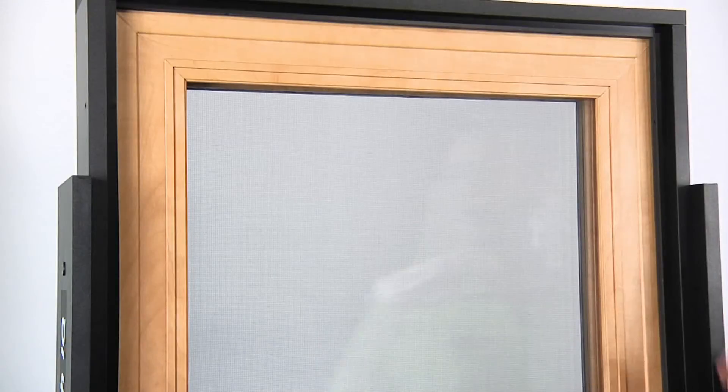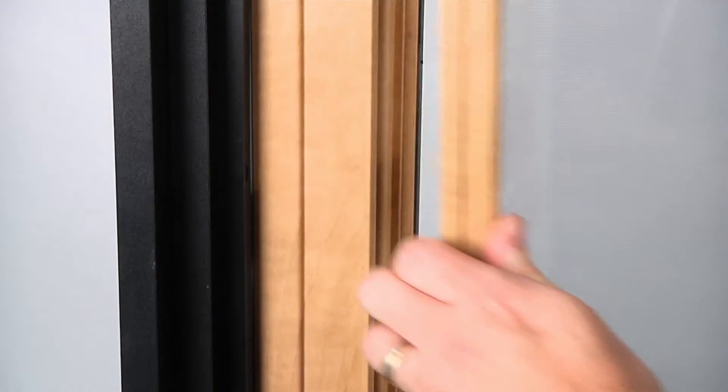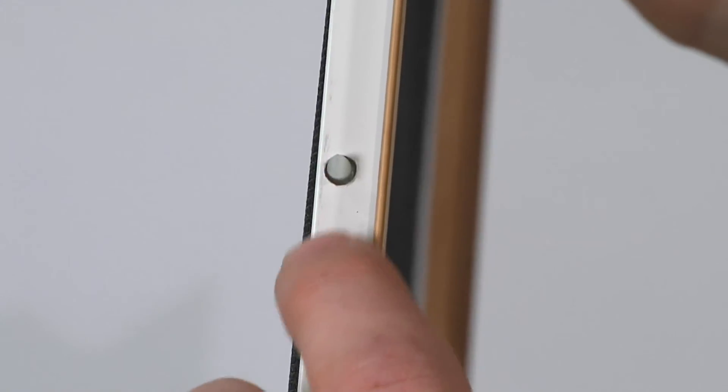All i-Series casement windows also come standard with BetterView, a high-definition fiberglass insect screen. These screens are housed by a special hidden pressure-fitted system.